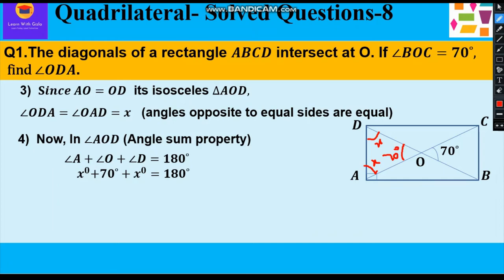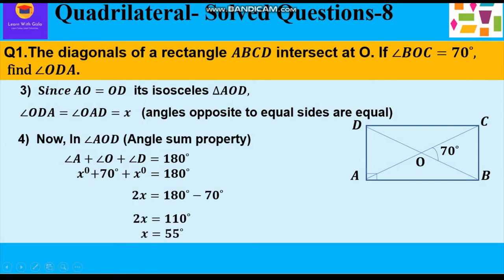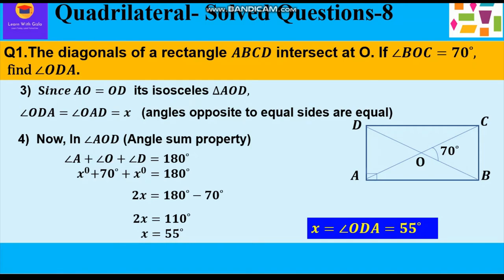X plus X is 2X and 180 minus 70 is 110. So X is equal to 110 divided by 2 that is 55 degree. So X value is 55 degree, which is also angle ODA. This is how we have calculated angle ODA, which has come 55 degree.